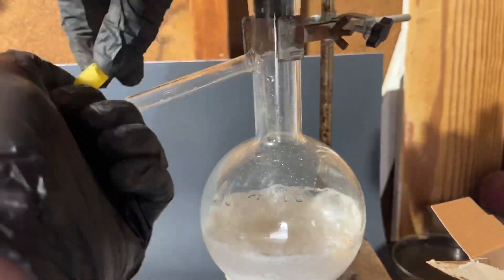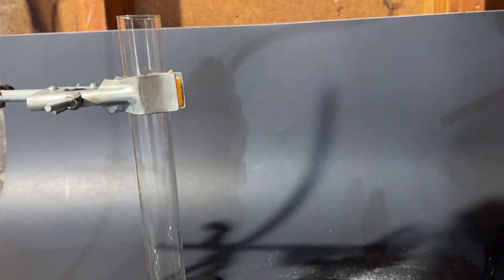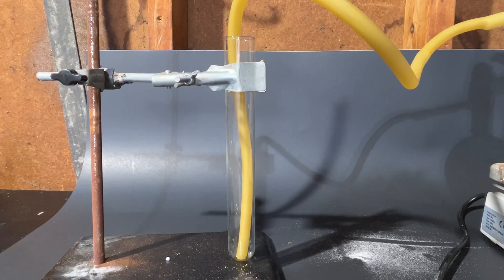This should boil out ammonium bicarbonate, which I can collect by attaching one end of a rubber tube to the flask, and the other end I put in a chilled test tube. And after about 30 minutes, literally nothing happened.